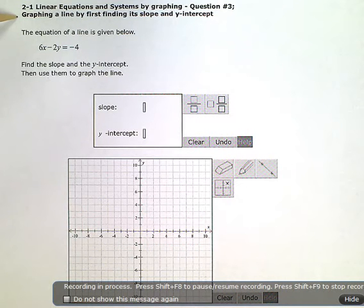Graphing a line by first finding its slope and y-intercept. The equation of a line is given below. Find the slope and the y-intercept, then use them to graph the line.